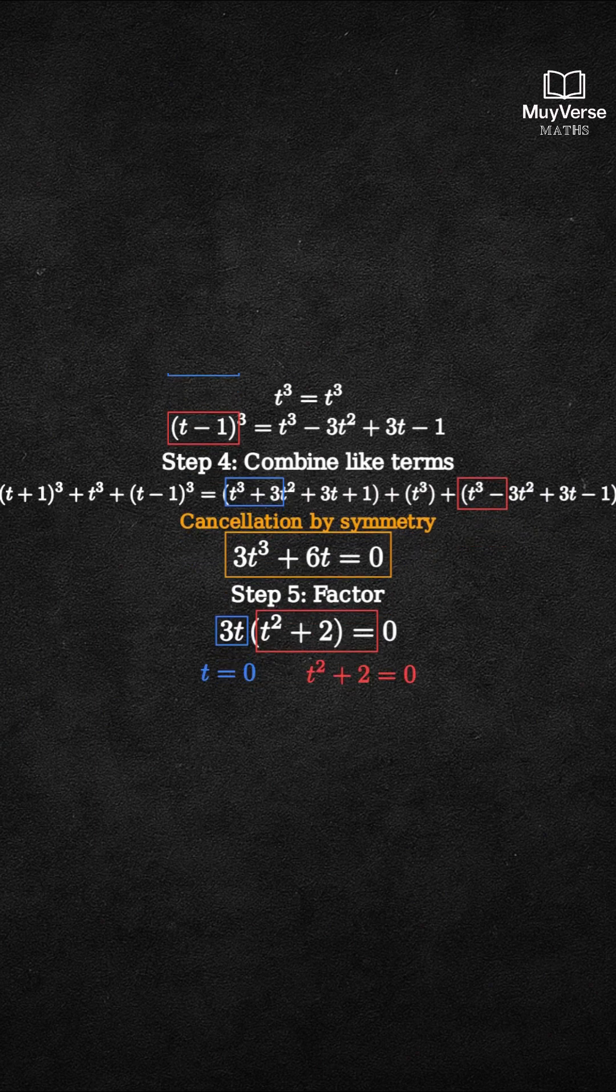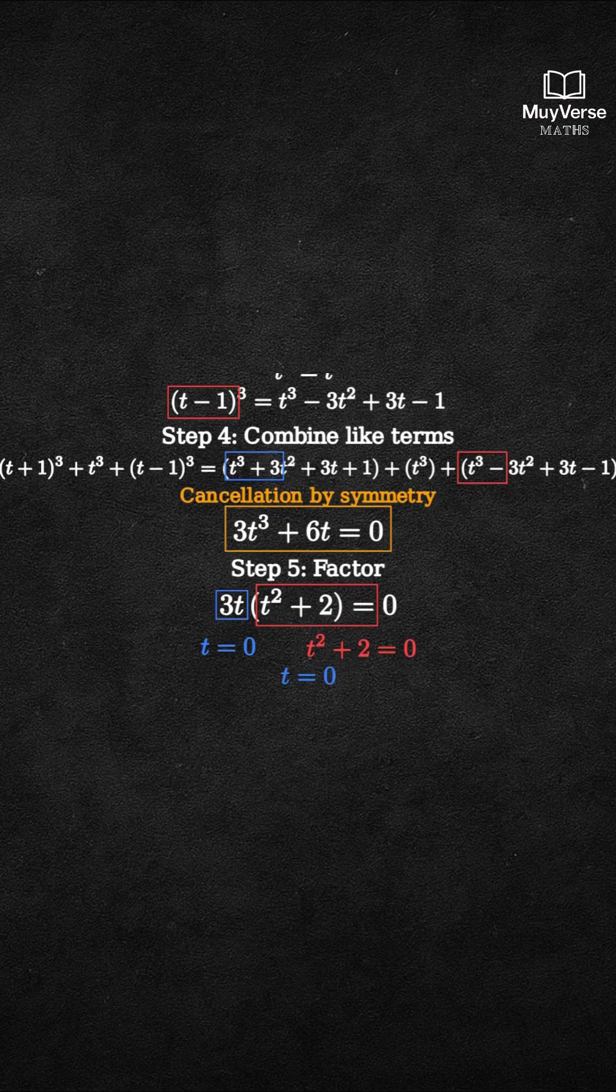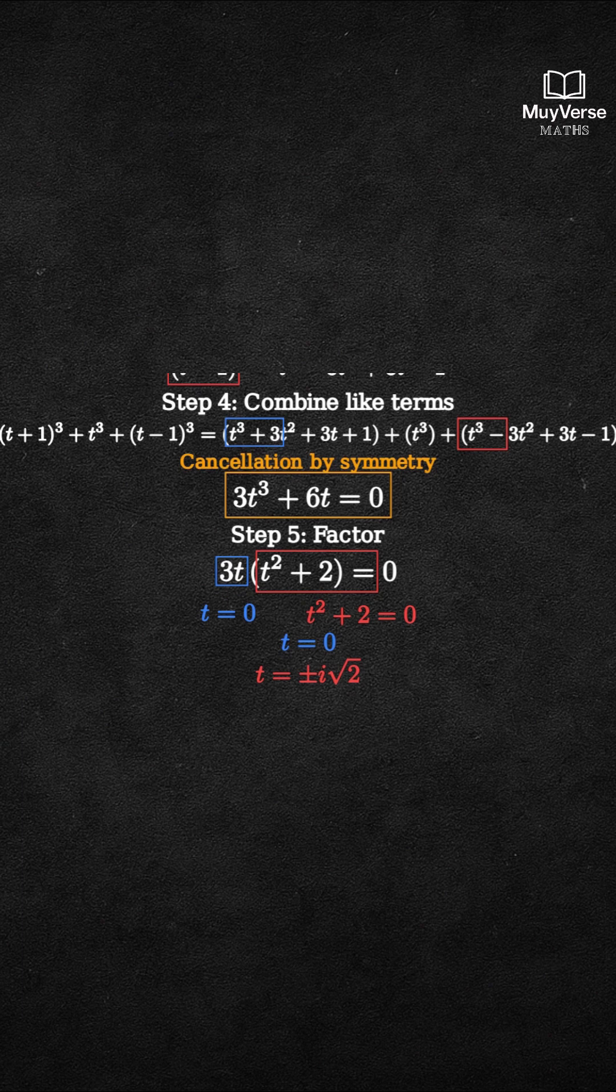From t equals 0, we already have t equals 0. From t squared plus 2 equals 0, t squared equals negative 2. So t equals plus or minus i times square root of 2.